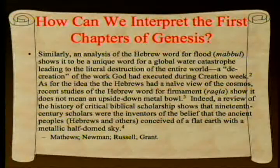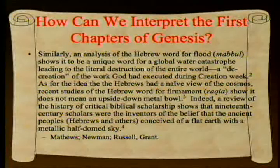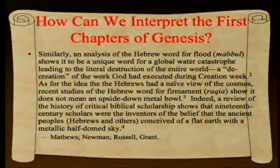A review of the history of critical biblical scholarship shows that 19th-century scholars were actually the inventors of the belief that ancient peoples—Hebrews and others—conceived of a flat Earth with a metallic half-dome sky. This really doesn't come from a careful reading of the ancient documents themselves; it made a good story, got picked up, and has kind of lived on its own.